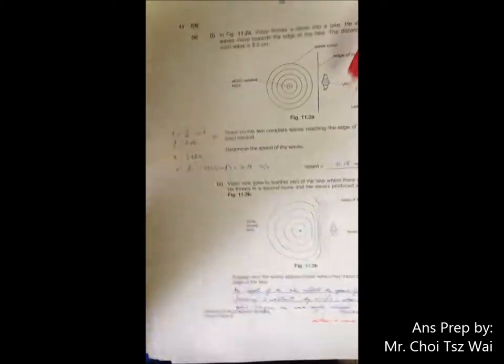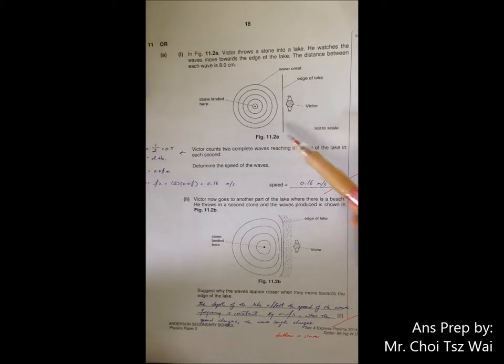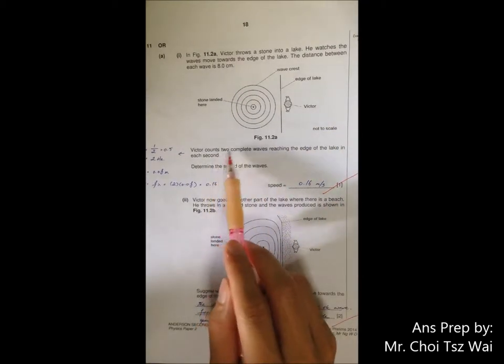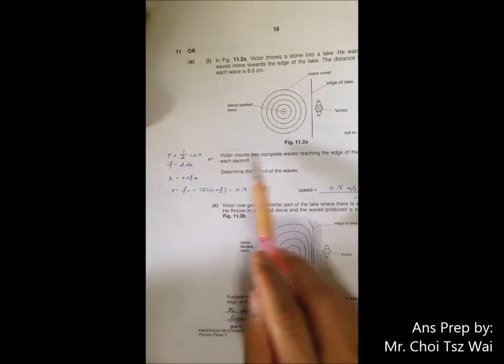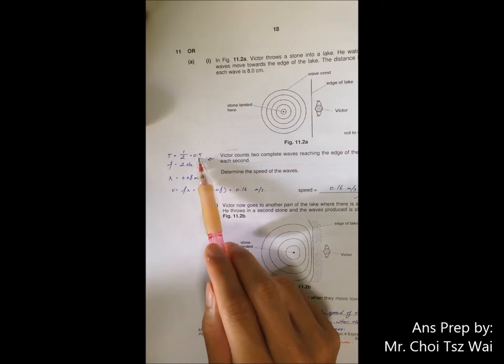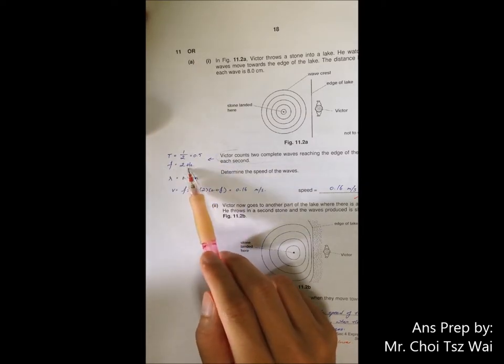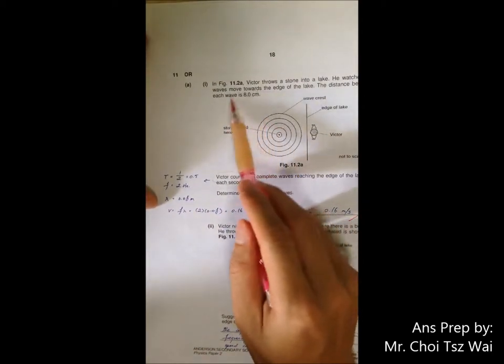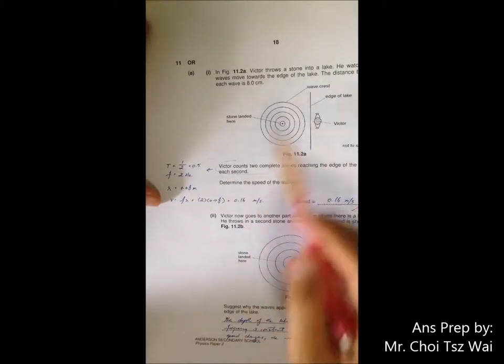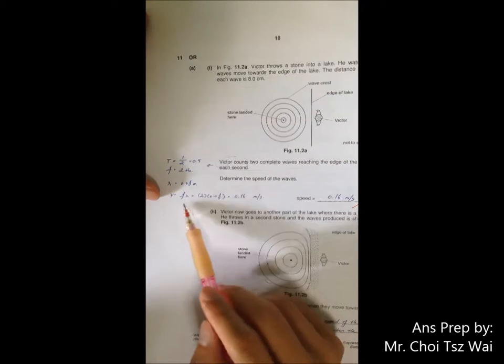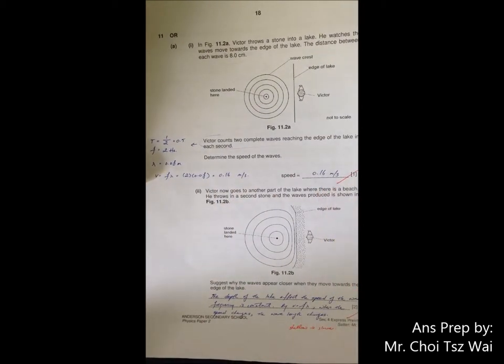Last question. You have to read the question very carefully here because from this sentence you can deduce the period of the wave and which you can use f equals to 1 over T to find the frequency. And then you have to make use of this information here to find out the wavelength. So distance between each wave is your wavelength. So use your v equals to f lambda. You can then find the speed.